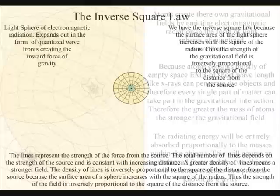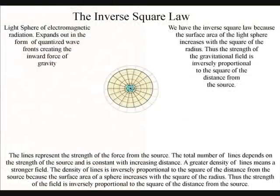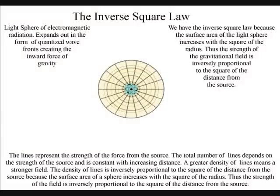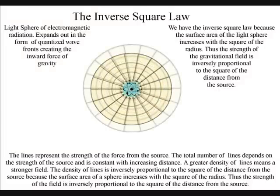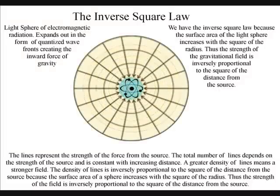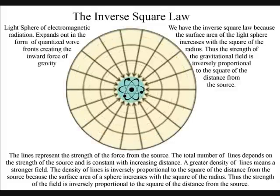We have the inverse square law because the surface area of the light sphere increases with the square of the radius, thus the strength of the gravitational field is inversely proportional to the square of the distance from the source.